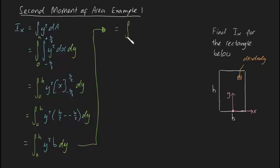We get b y³/3 with limits from 0 to h. When we evaluate that, we get b/3 times (h³ - 0), which equals bh³/3. This is the area moment of inertia.